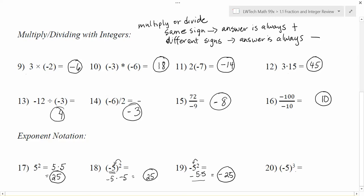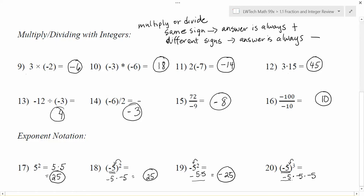Sometimes we get things like negative 5 to the third power. All the same rules apply — look at what comes in front of the power. In this case it's the parentheses, so all of negative 5 is being cubed. That means it's negative 5 times negative 5 times negative 5. When doing multiple multiplications, go left to right: negative 5 times negative 5 gives positive 25 because the signs were the same. Then multiply that by another negative 5 — 25 times 5 gives 125, and a positive times a negative results in negative 125. So negative 5 to the third power equals negative 125.